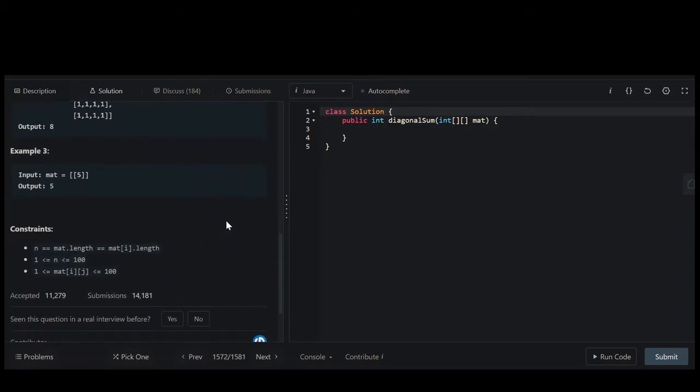So the constraints are that it is a square. It will be no bigger than 100 on both sides, and each value inside of this matrix will be between 1 and 100.